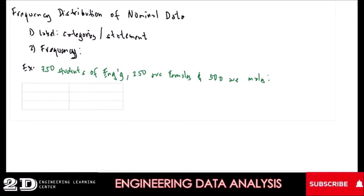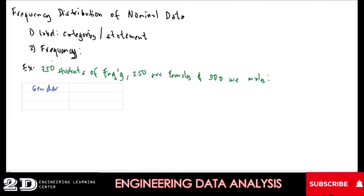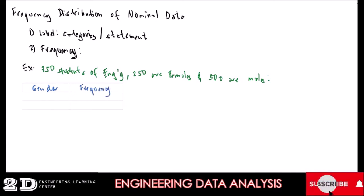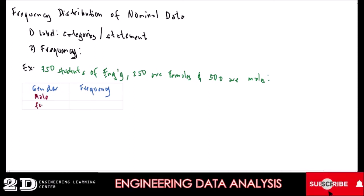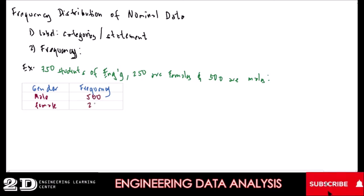We will have a label here for gender — so this first column will be 'Gender.' The other column will be for the frequency. The categories under gender are 'Male' and 'Female.' So for males, the frequency is 500, and for females, it is 250.